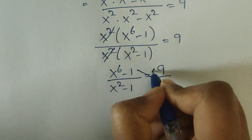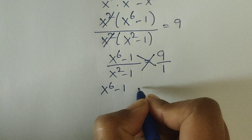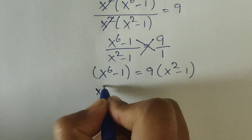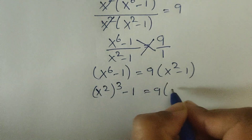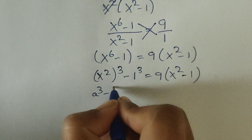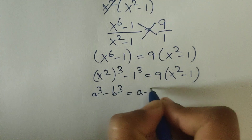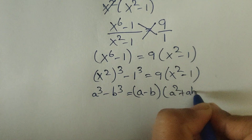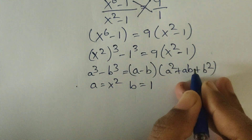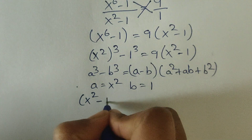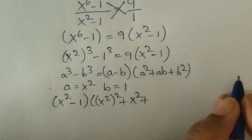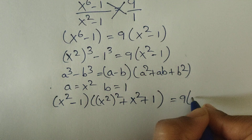Now we do cross multiplying, so x to the power of 6 minus 1 equals 9 times x squared minus 1. We can rewrite x to the power of 6 as x squared to the power of 3, so we have x squared to the power of 3 minus 1 equals 9 times x squared minus 1. We can also write 1 as 1 cubed. This is now in the form of a cube minus b cube. The formula is: a cubed minus b cubed equals a minus b times a squared plus ab plus b squared. Applying this, with a equal to x squared and b equal to 1.